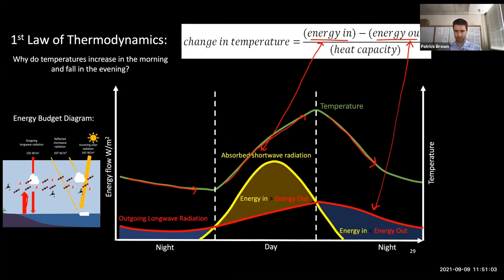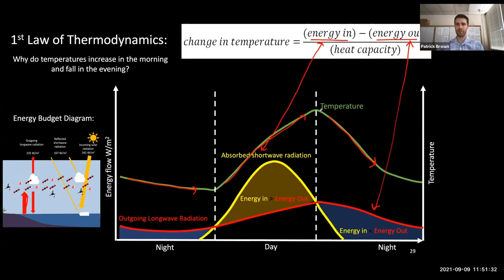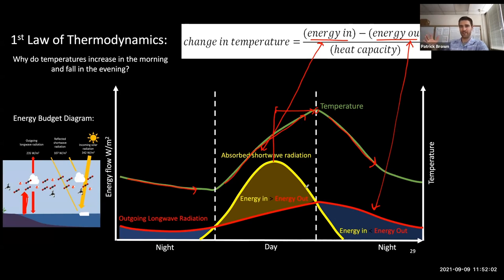This graph explains why daytime high temperatures occur after solar noon. Temperature peaks when energy in equals energy out, not when energy in is largest. Even though energy in is decreasing after solar noon, it's still higher than energy out — so you're still increasing temperature until those two curves cross. Then you have more energy flowing out than coming in, and temperature starts to fall. The same principle explains why July and August are the warmest months even though the longest day is June 21st.